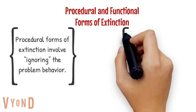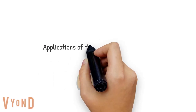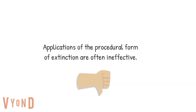There are procedural and functional forms of extinction. An example of a procedural form would be ignoring a problem behavior — that's a procedure that might not necessarily match a function. It would be considered functional if the function of the behavior was to gain attention. Functional forms of extinction involve withholding the maintaining reinforcer. I have to make sure that the extinction procedure I'm applying matches the function of that behavior, because applications of procedural forms of extinction are often ineffective when we're not looking at the function of the behavior.